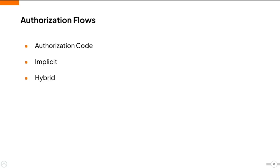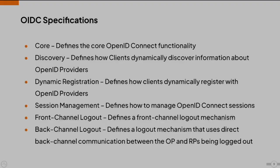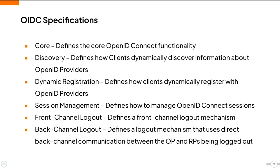The OIDC specification defines three main flows for different scenarios: the authorization code flow, implicit flow, and hybrid flow, which will be discussed in detail in the advanced training videos. In addition to the core OIDC specification, there are other specifications covering: discovery (how clients dynamically discover OpenID providers), dynamic registration (how clients register with OpenID providers), session management (how to manage OIDC sessions), and front-channel and back-channel logout (how single logout is implemented).